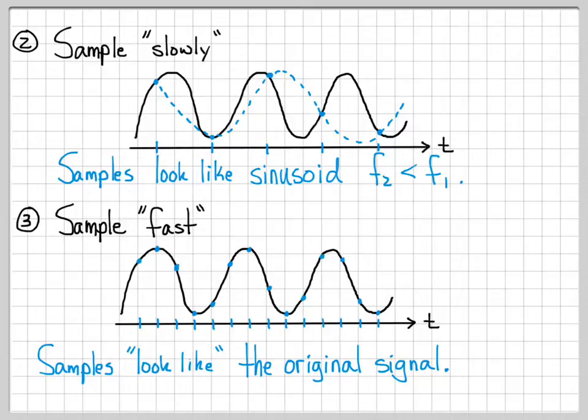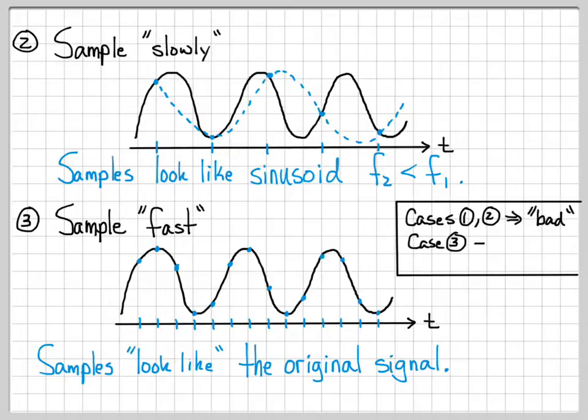So this raises some interesting questions. How do I avoid cases one and two? Cases one and two were kind of bad. The sample values did not look like the original signal. So we'd like to avoid that. Case three was good. That was a good case. What does it mean to sample fast enough? So that's what we're going to investigate now more rigorously. How do we avoid case one and two and make sure that when we sample a signal, we end up in kind of a case three situation where we've sampled fast enough and captured all of the relevant information?